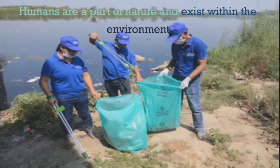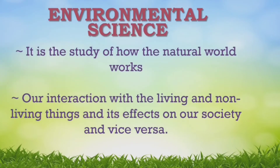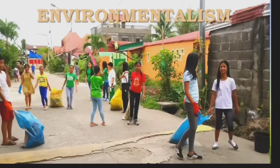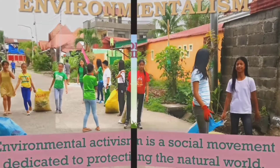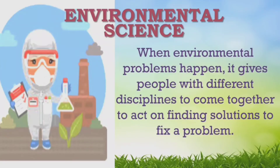So what is environmental science? It is the study of how the natural world works, our interaction with the living and non-living things, and its effect on our society and vice versa. Environmentalism or environmental activism is a social movement dedicated to protecting the natural world — very different from environmental science, which brings people with different disciplines together to find solutions to fix environmental problems.